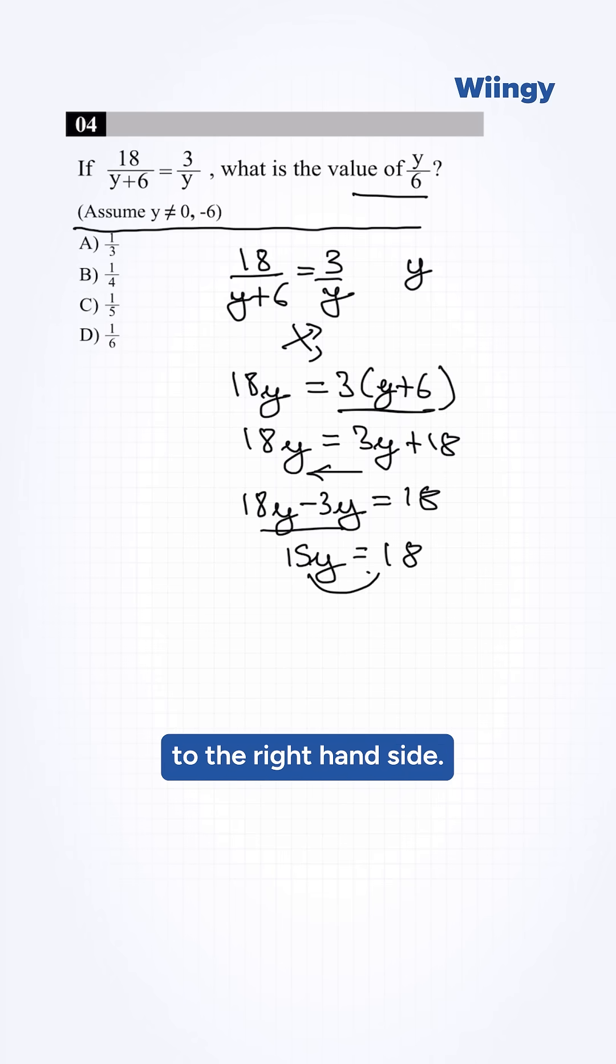Bringing 15 to the right hand side, so y is equal to 18 upon 15. Dividing this by 3, 3 fives are 15 and 3 into 6 are 18, so y is equal to 6 by 5.